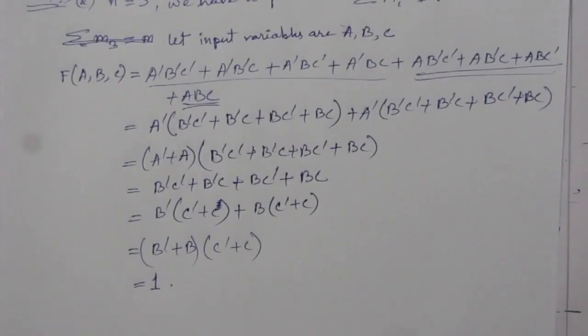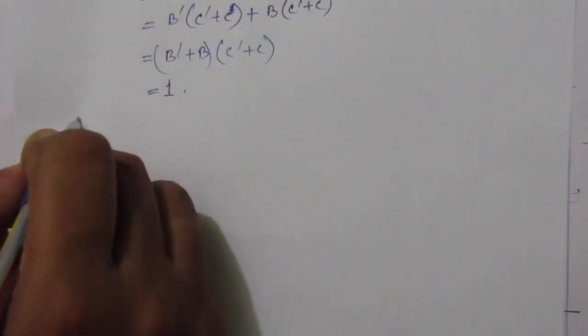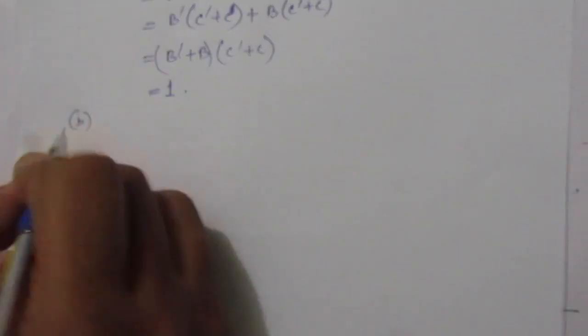So the first part of the problem is done. We have proved the statement for n equal to 3. Now we have to do the second part of the problem.